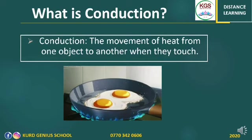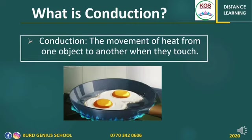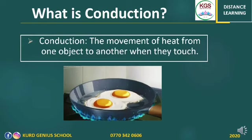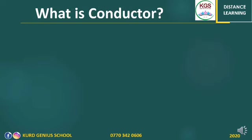To fry an egg, you put it in the pan, then you put the pan on the stove. Heat from the stove makes the pan hot, and heat is transferred at once from the pan into the egg. As you can see, that is how the process of conduction works.